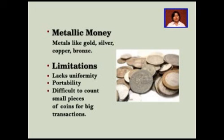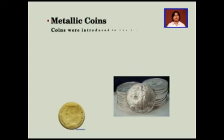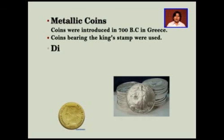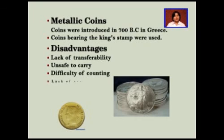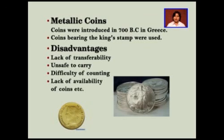Because of which, the metallic money was discontinued. The coins were introduced in 700 BC in Greece, and these coins used to bear the king's stamp. But again, there was the disadvantage of safety — there was no safety for metallic money, and it was really difficult to count so many coins for larger transactions. There was also difficulty in availability of coins, and they lacked transferability from one region to another. Because of all these discrepancies and especially after the Industrial Revolution, the paper money was invented.